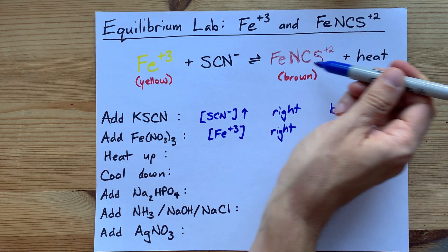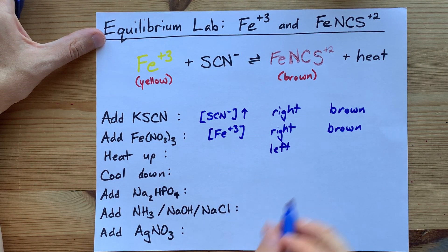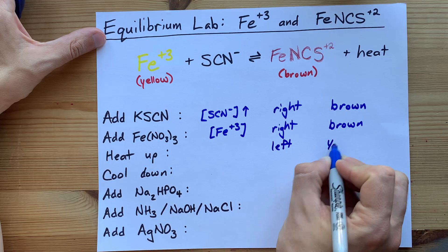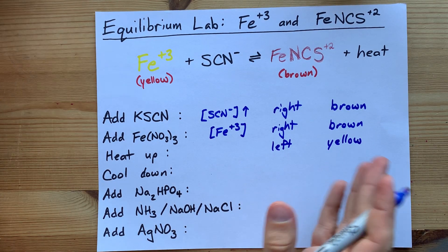It can shift to the left, which is the opposite of what happened when you added a reactant. In that case, it's going to look less brown. Your teacher probably wants you to say that it's going to turn more yellow.